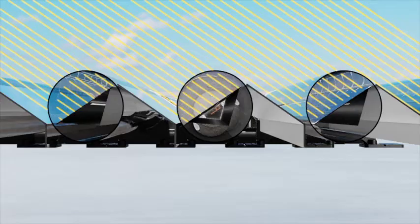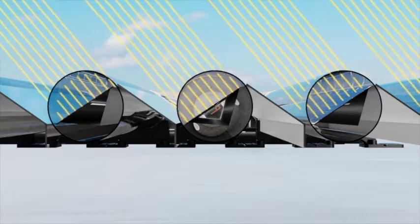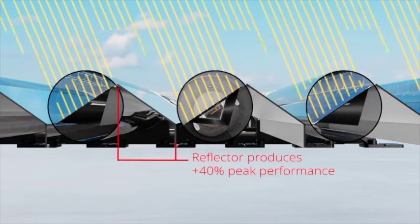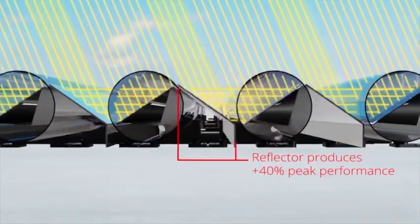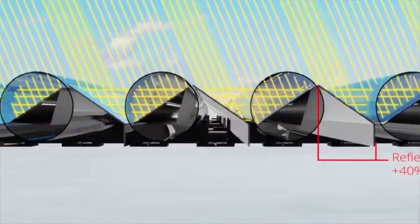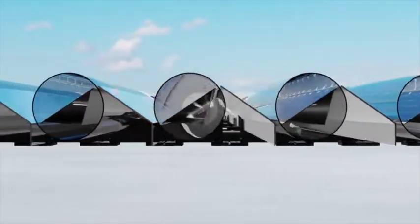To maximise summer outputs when the sun is higher, a reflector captures the solar energy that would otherwise have missed the tubes, increasing peak performance by as much as 40% and average annual yields by 15%.